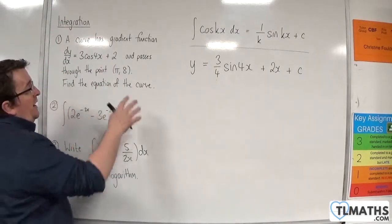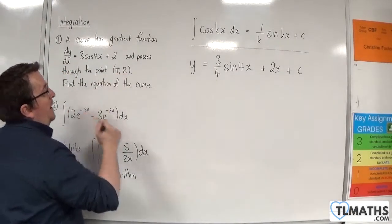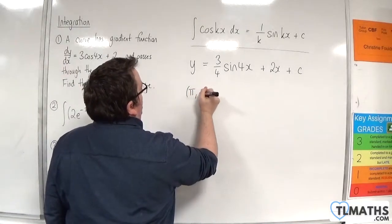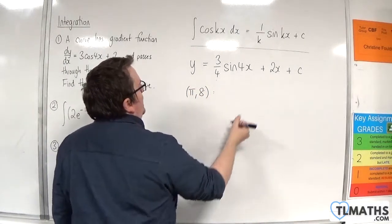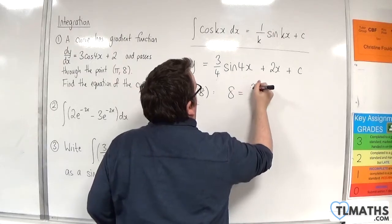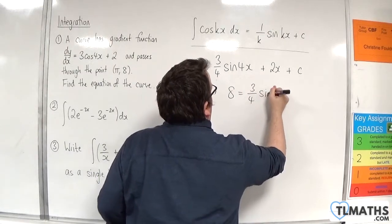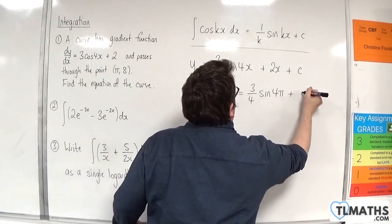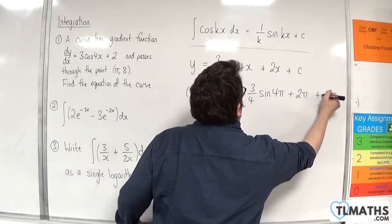Now we can work out the particular solution by substituting in pi over 8. We'll get 8 is equal to 3 quarters sine of 4 pi plus 2 lots of pi plus c.